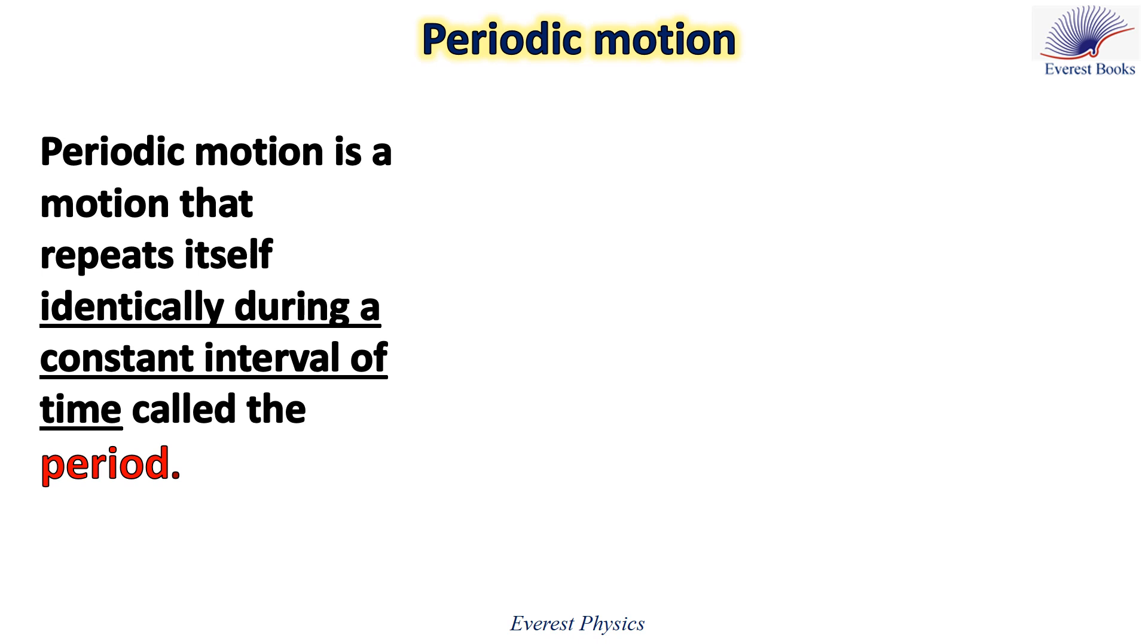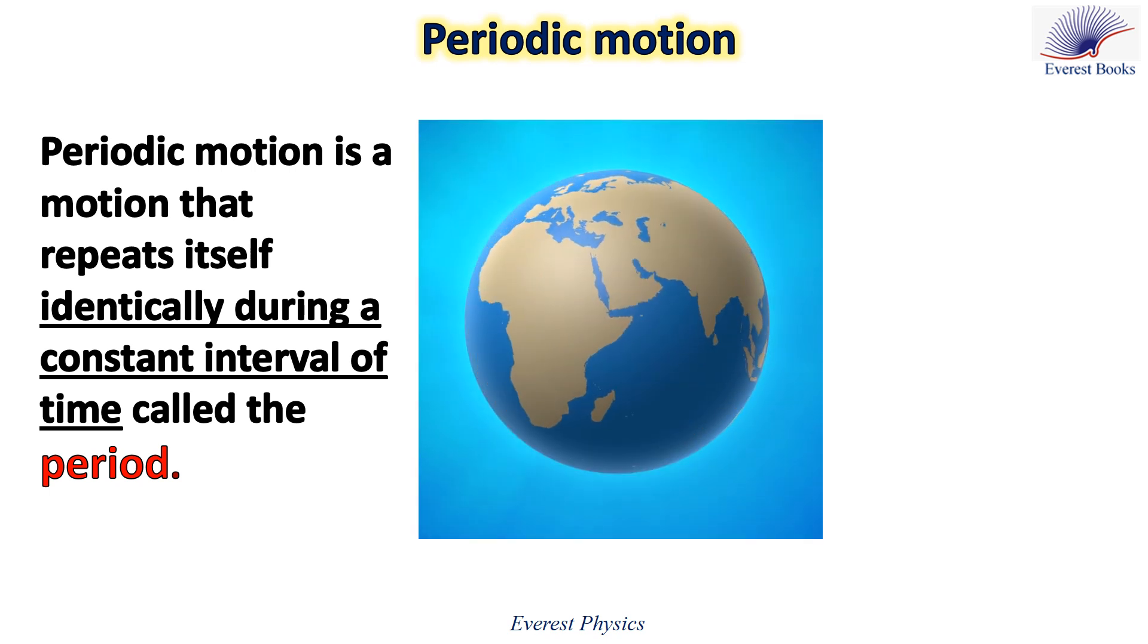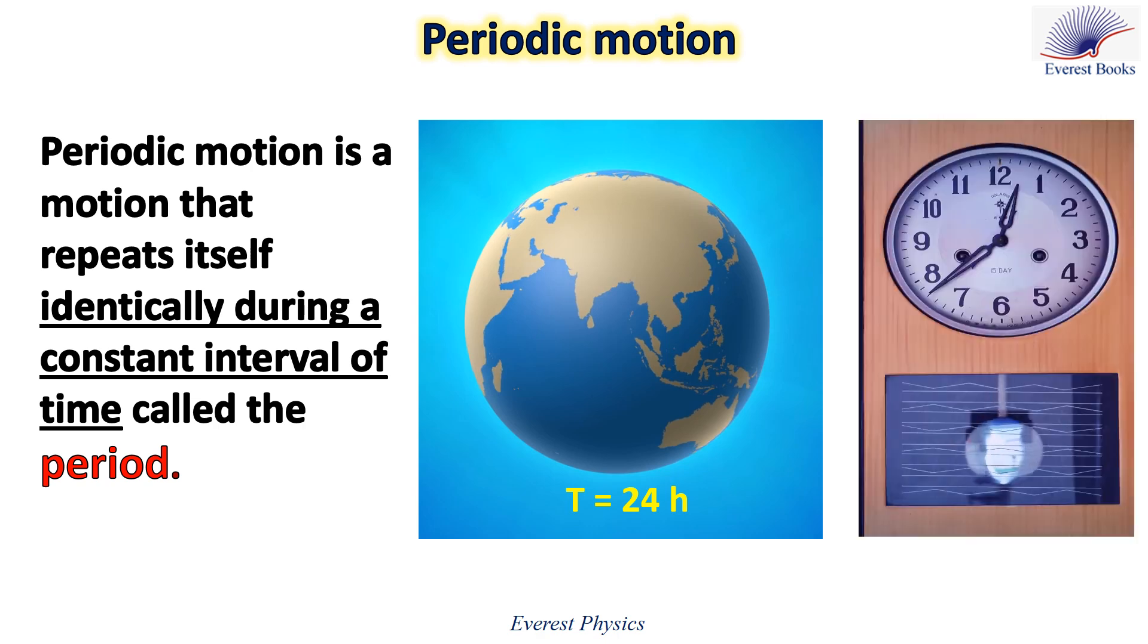Periodic motion is a motion that repeats itself identically during a constant interval of time called the period. The rotation of the earth around its axis is an example of a periodic motion. It takes the earth 24 hours to complete one rotation. Then the period of this rotational motion is 24 hours. The motion of the clock pendulum is another example of periodic motion.